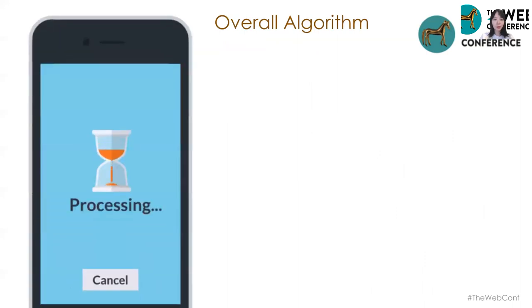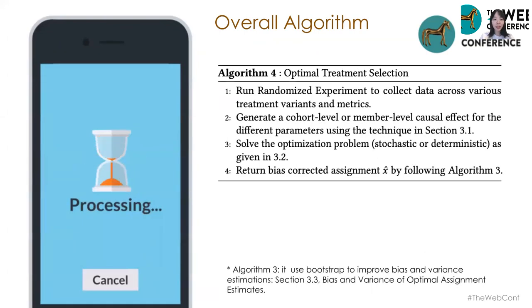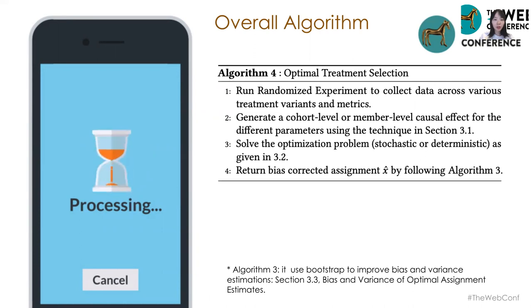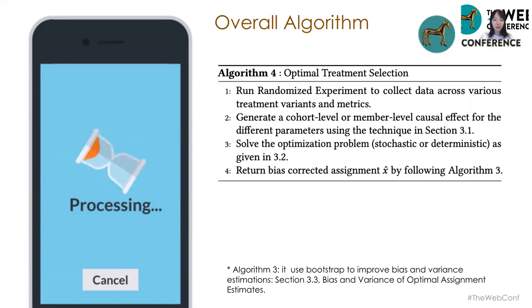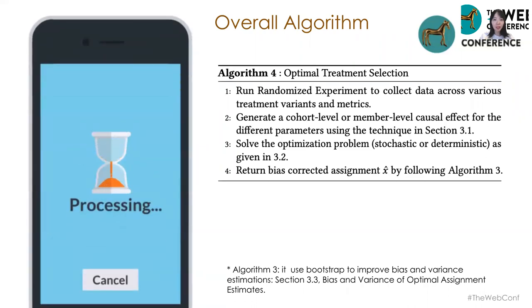Now let's recap. We first run a randomized experiment to collect data across various treatments and metrics. Then we generate cohort-level or member-level causal effects for the different parameters. We solve the optimization problem, either stochastic or deterministic. In the last step, we return a bias-corrected assignment X-hat by following Algorithm 3. Algorithm 3 uses bootstrap to improve the bias and variance estimations — check out the details in Section 3.3 of the paper.